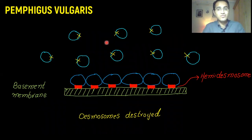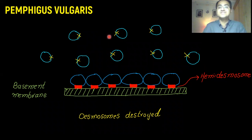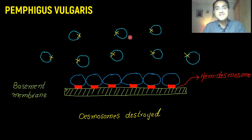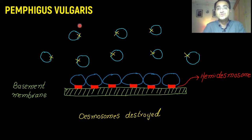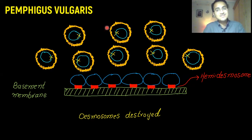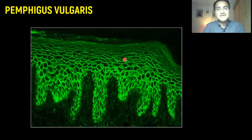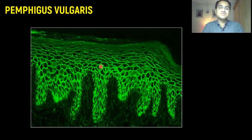There is another technique called immunofluorescence. In immunofluorescence, you stain the antibodies that have destroyed desmosomes — you add a stain to look for those antibodies. Since these antibodies bind to desmosomes and desmosomes are present around the cells, the antibodies are also present around the cells. So when you add this stain, it glows up around the cells. You receive a picture like this on immunofluorescence, in which staining is around the cells where desmosomes and antibodies are present.